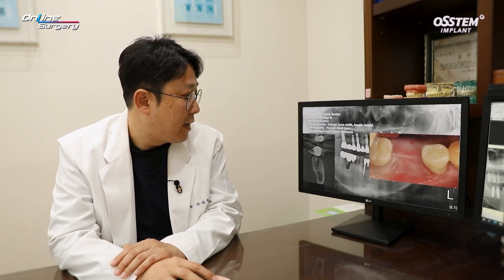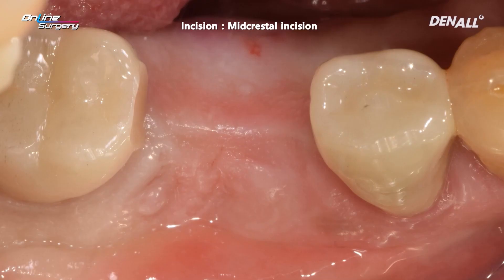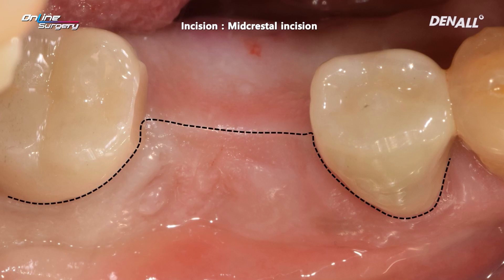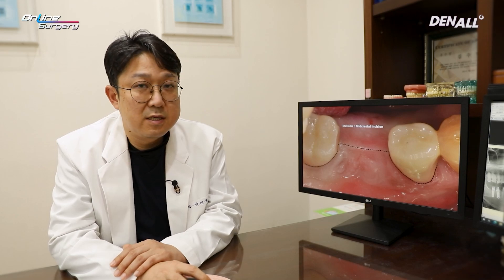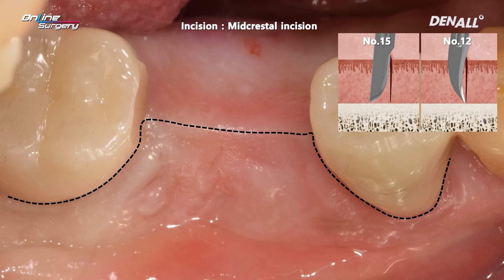A 5.0 by 8.5 implant would be placed. At the time of surgery, an incision would be made — a circular incision and midcrestal incision. The patient had sufficient keratinized tissue width, so a pericrestal incision would not be necessary; a midcrestal incision is planned. When using a blade, number 15 is easier to use, but it is not easy to cut at the edge. The number 12 blade works better for the interproximal area where it touches the tooth — that will cut more cleanly.